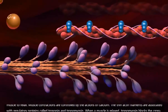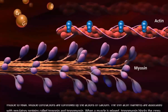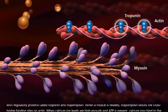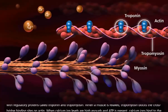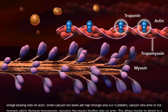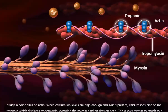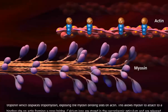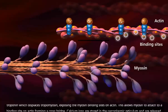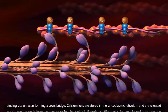Muscle contractions are controlled by the actions of calcium. The thin actin filaments are associated with regulatory proteins called troponin and tropomyosin. When a muscle is relaxed, tropomyosin blocks the cross-bridge binding sites on actin. When calcium ion levels are high enough and ATP is present, calcium ions bind to the troponin, which displaces tropomyosin, exposing the myosin binding sites on actin. This allows myosin to attach to a binding site on actin, forming a cross-bridge.